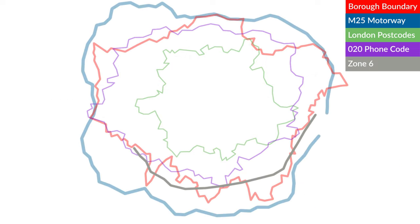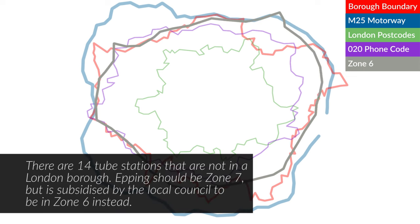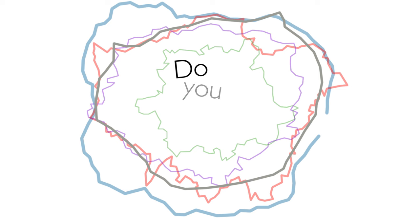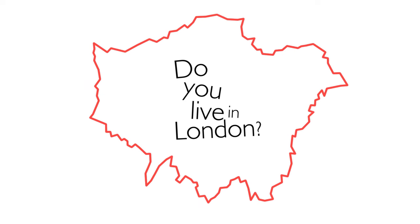So how about this? As the majority of the travelcard zones stop at zone 6, are you in London if you live up to and including the zone 6 travelcard area, which is shown here? But again there are areas of London not in this area, and some parts of zone 6 which go outside the London borough boundary. So the question is: do you live in London? We think we're going to let you decide that for yourself.